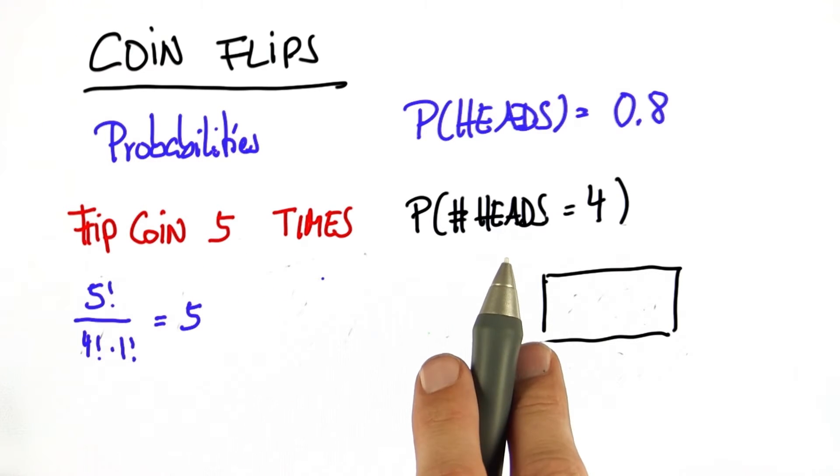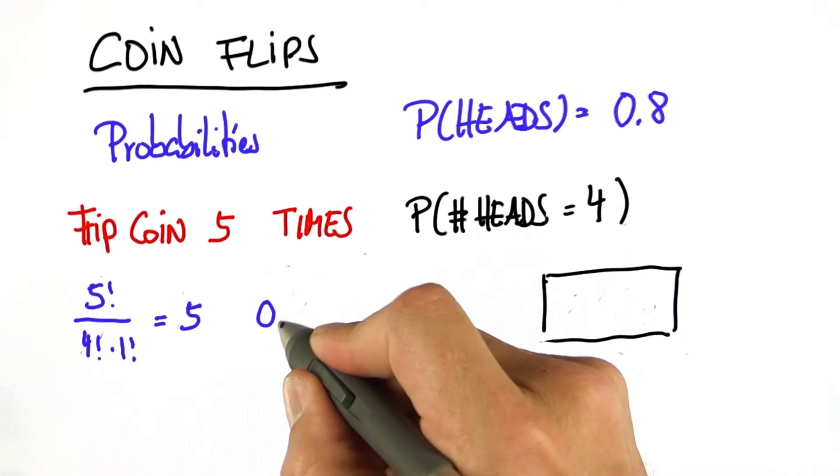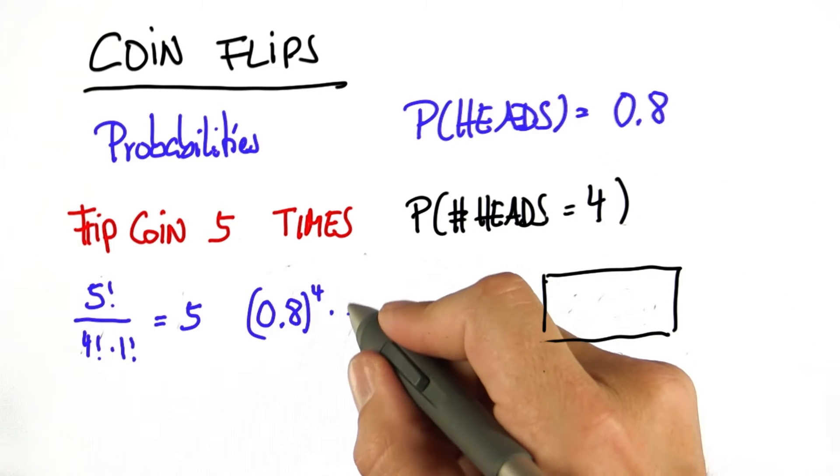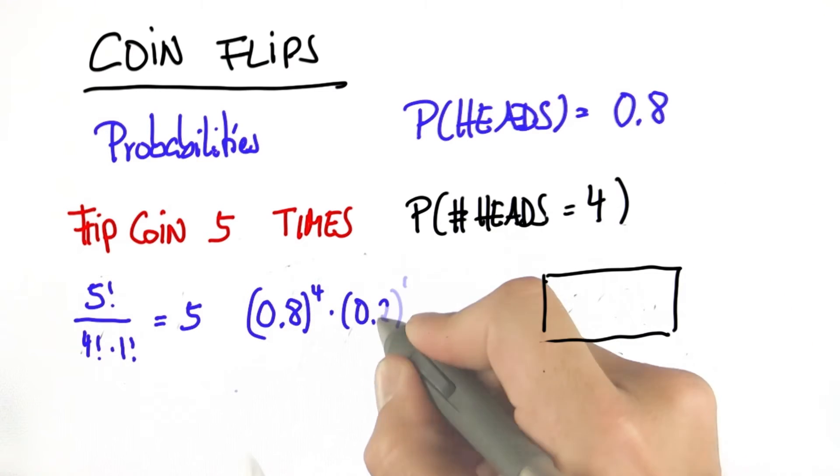The question now, what's the probability of those? Well, they have heads 4 times. This is 0.8 to the 4 and tails once, which is 0.2 to the 1.